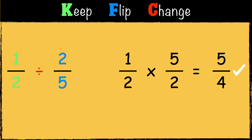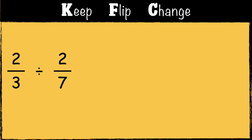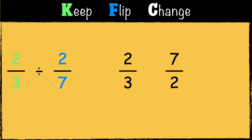Here's the third example: two-thirds divided by two-sevenths. First we have Keep — we keep the first fraction exactly as it is: two-thirds. Next we have Flip — we flip the second fraction, so instead of two-sevenths we have seven over two.